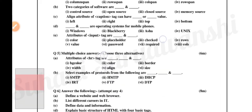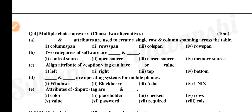Next question number 4, multiple choice answer. A, dash and dash attributes are used to create a single row and column spanning across the table: colspan, rowspan. B, two categories of software are open source, closed source, memory source. C, align attribute of caption tag can have left, right, top, bottom or value. D, dash and dash are operating systems for mobile phones: Windows, Blackberry, Asha, Unix. E, attributes of input tag are: color, placeholder, checked, rows, value, password, required, calls.